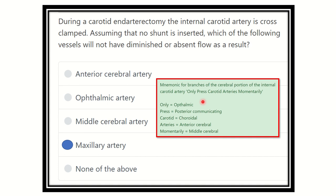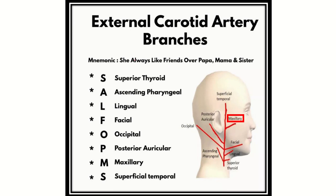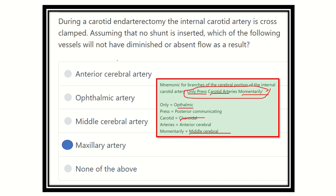Here is the mnemonic to remember the branches of the internal carotid artery: 'Only Place Of Carotid Artery Momentarily' — O for ophthalmic, P for posterior communicating, C for anterior choroidal, A for anterior cerebral, and M for middle cerebral artery. The branches of the external carotid artery mnemonic is 'She Always Likes Friends Over Papa Mama And Sister.' That's all about the internal and external carotid arteries. Thank you all.